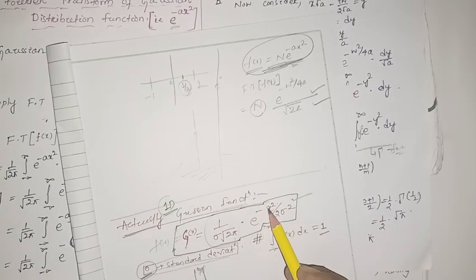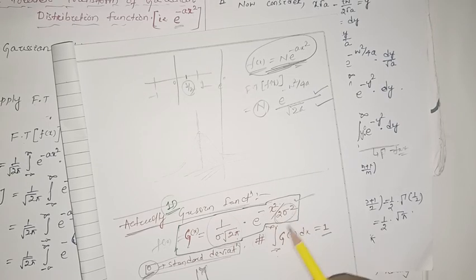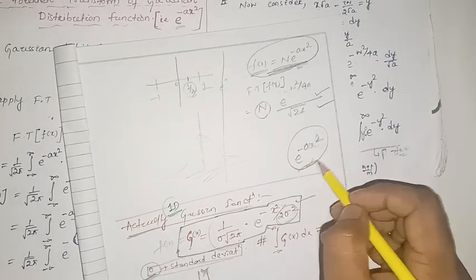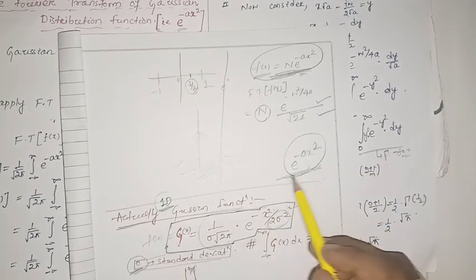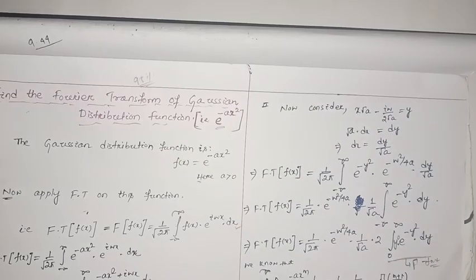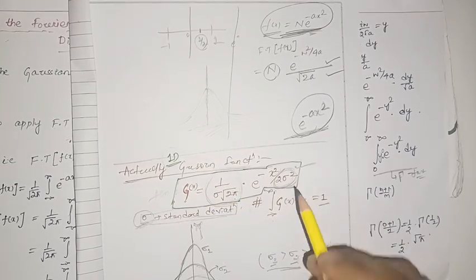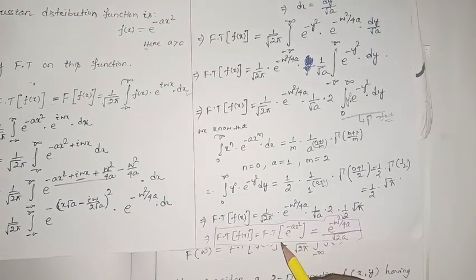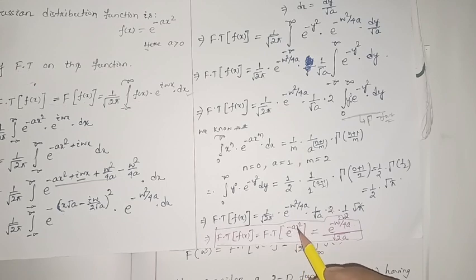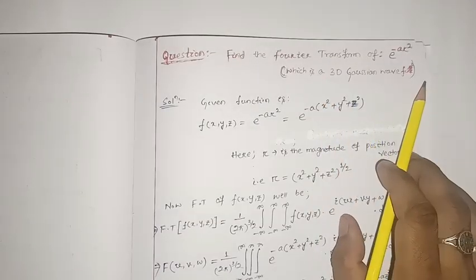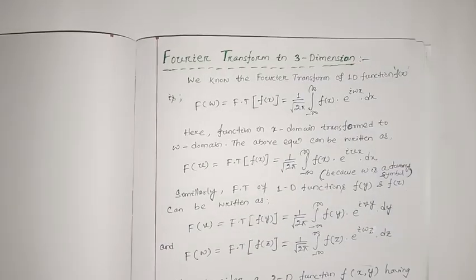In our last class I did not consider the constant one by sigma root over of two pi, and I also did not consider two sigma squared separately as a constant. I only considered e to the power minus a x squared, where two sigma squared itself is a constant a. So e to the power minus a x squared also gives this type of Gaussian distribution. The actual Gaussian function has those constants, but for simplicity we used e to the minus a x squared. Keep in mind the result — e to the minus omega squared by 4a by root over of 2a — it is needed for the 3D case.